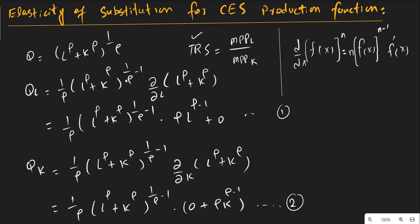The story starts from the first-order derivative. This is the CES technology — the simplest form of the CES production function. We have to apply the generalized power rule, because the CES production function has a whole power. When the production function has a whole power and we want to take the derivative of it, we have to apply the generalized power rule. The power will be multiplied with the coefficient, and then the power will be reduced by one.